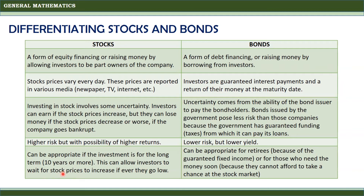Finally, stocks can be appropriate if the investment is for the long term, like 10 years or more. This can allow investors to wait for stock prices to increase if ever they go low. Bonds can be appropriate for retirees because of the guaranteed fixed income, or for those who need the money soon because they cannot afford to take a chance at the stock market.